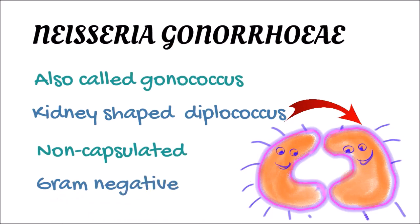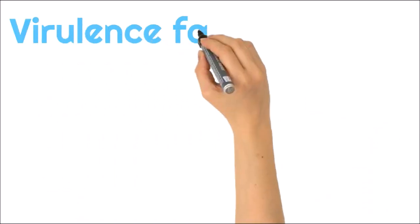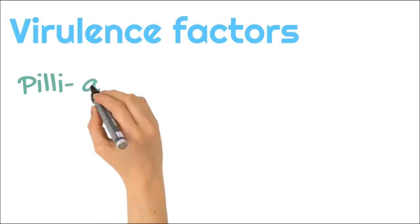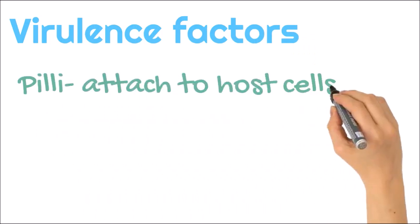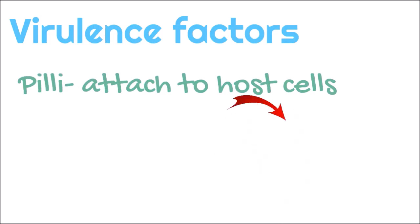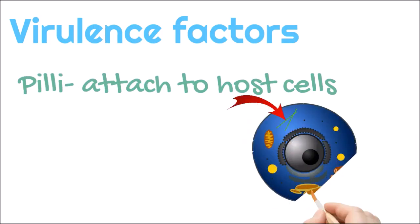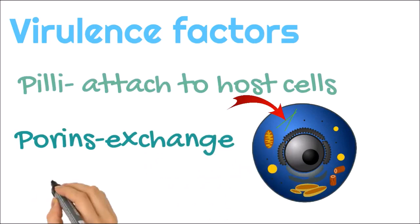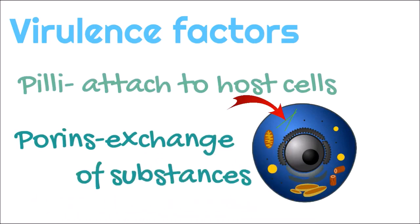We will be discussing the virulence factors or the pathogenicity of Neisseria gonorrhoeae. It contains Pili or Fimbriae, which helps in adhesion to host cells and prevents phagocytosis of the bacteria. There are porins, which are transmembrane channels across the gonococcal surface and help in the exchange of molecules. There is opacity-associated protein, or protein 2, which helps in adhesion to neutrophils and other gonococci.